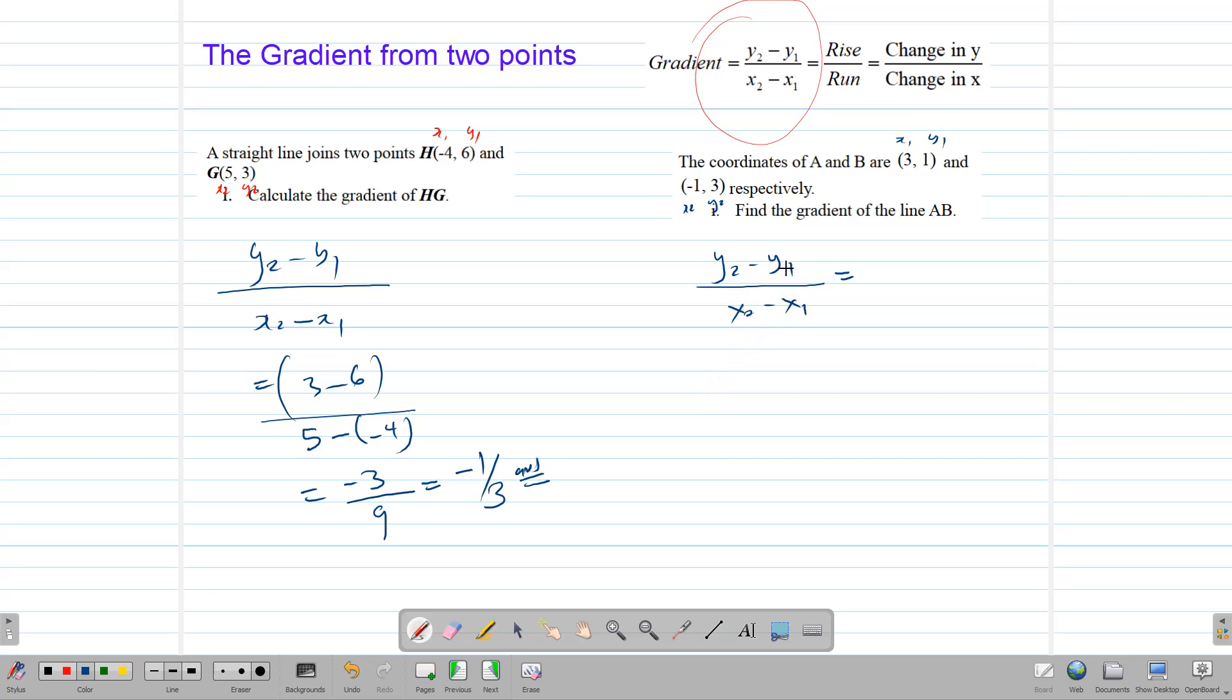So let's take our y2, y2 is 3, take away our y1 over x2, which is negative 1, take away 3. So we want to be consistent here. So 3, take away 1, that's y2, take away y1, and x2, negative 1, take away 3.